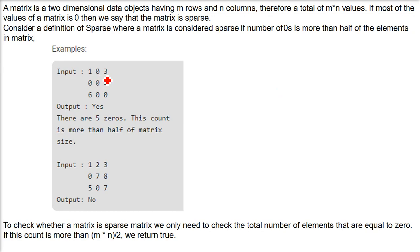For a sparse matrix, if this is an input matrix, let's calculate how many zeros are there. This is a 3 by 3 matrix, so m is 3 here and n is 3 here. This is an m cross n matrix.